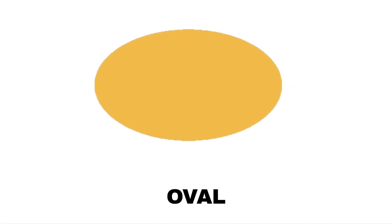An oval is a 2D shape that looks like an elongated or stretched circle. Just like a circle, an oval too does not have any sides or corners and is made up of a curved line.